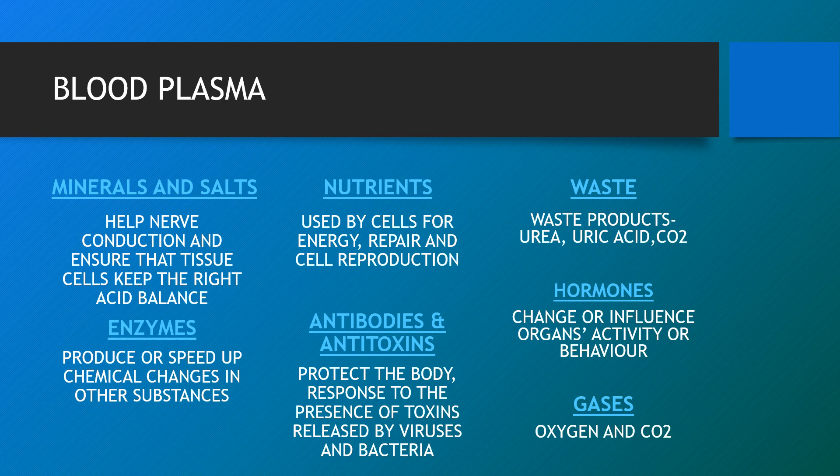Plasma contains minerals and salts that help nerve conduction and ensure that tissue cells keep the right acid balance. It carries nutrients used by cells for energy, repair and cell reproduction, and is responsible for removal of waste products such as urea, uric acid and CO2. Enzymes produce or speed up chemical changes in other substances. Antibodies and antitoxins protect the body and respond to the presence of toxins released by viruses and bacteria. Gases — oxygen and CO2 — are also transported in plasma.